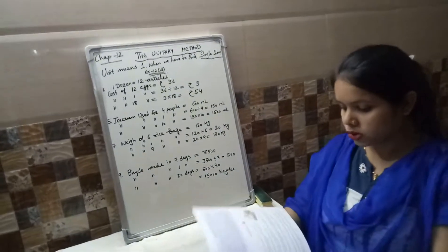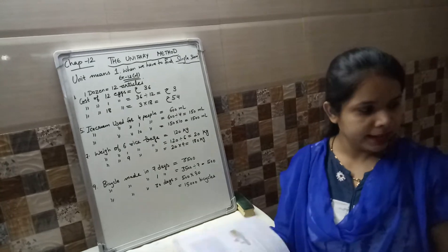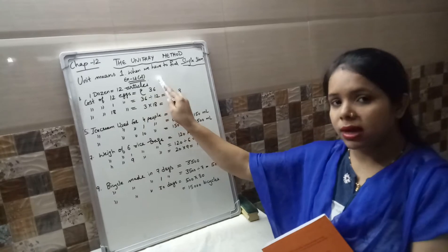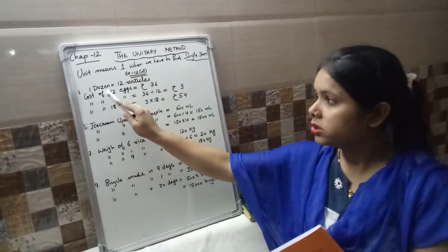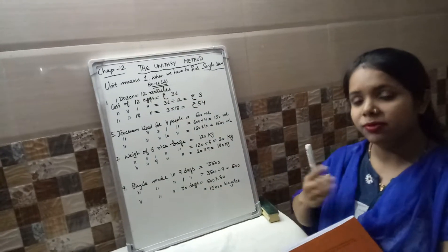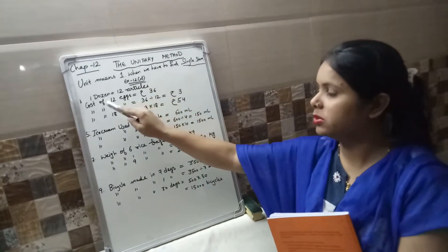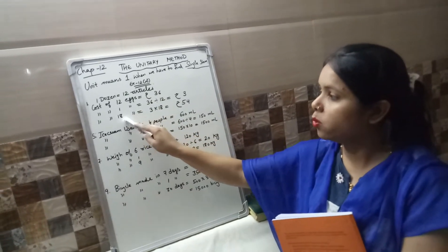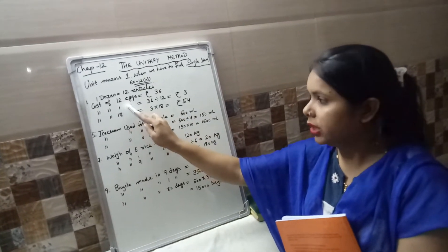Question number 1: X costs rupees 36 per dozen. How much will 18X cost? Dozen means 12 articles in 1 dozen. That means cost of 12X is rupees 36. You have to find cost of 18X. You are not able to tell directly. First we have to find for unit — unit means 1.